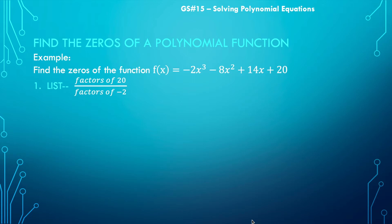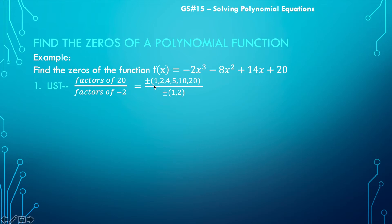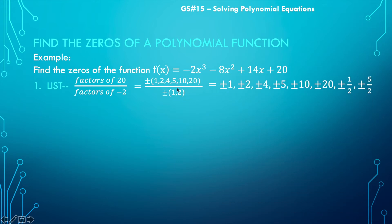The factors of 20 are 1, 2, 4, 5, 10, and 20. The factors of -2 are just 1 and 2. When listing them all out, you take all the factors in the numerator over each possibility in the denominator, but note that 2 over 2 gives 1, which you already have — so just add the new candidates. This gives a fairly long list of 8 numbers, positive and negative, so 16 options total.